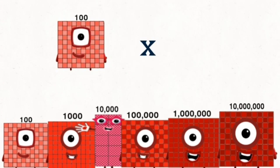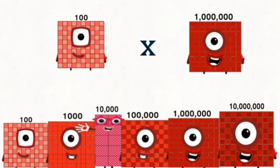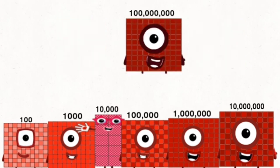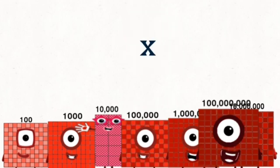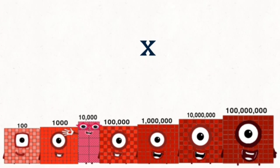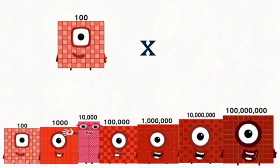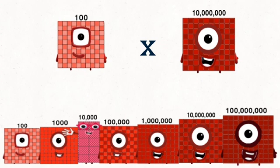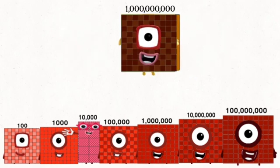1,000,000 equals 10,000,000. 10,000,000 times 10,000,000 equals one billion.